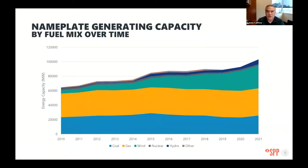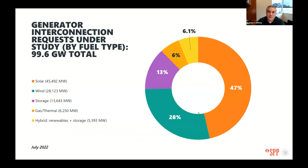This is a nice visual on the nameplate capacity we've seen over time. The amount of wind in the green area year-over-year has increased — we actually have 32.5 gigawatts of wind registered in the market. 30.5 gigawatts is operational and the remaining will be operational within the next couple of months. That amounts to over 14,000 individual wind turbines that we operate. It's obviously continuing to increase year-over-year. One thing to note is we still have a lot of gas and coal, which is very important in the transition we're seeing.